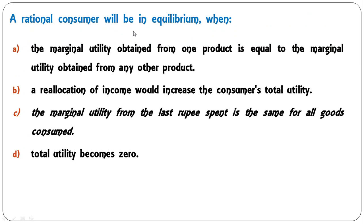Next: 'A rational consumer will be in equilibrium when' — the marginal utility obtained from one product equals that from any other product; a reallocation of income would increase total utility; the marginal utility from the last rupee spent is the same for all goods consumed; or total utility becomes zero? A rational consumer will be in equilibrium when the marginal utility from the last rupee spent is the same for all goods consumed, so C is the correct answer.